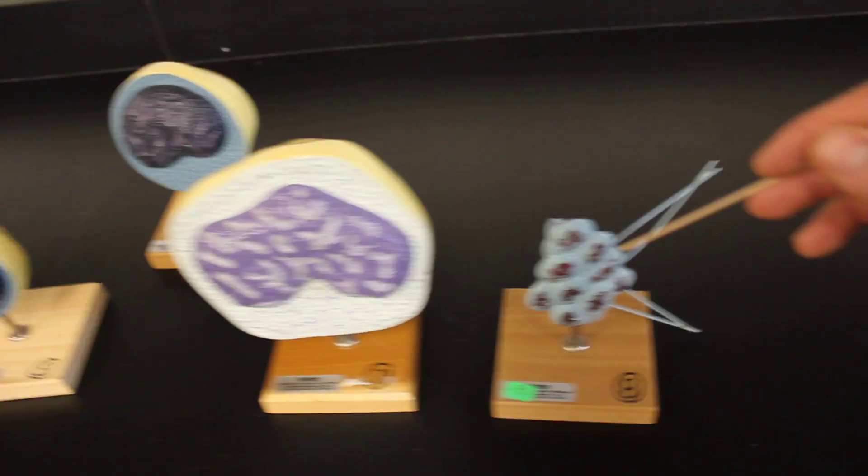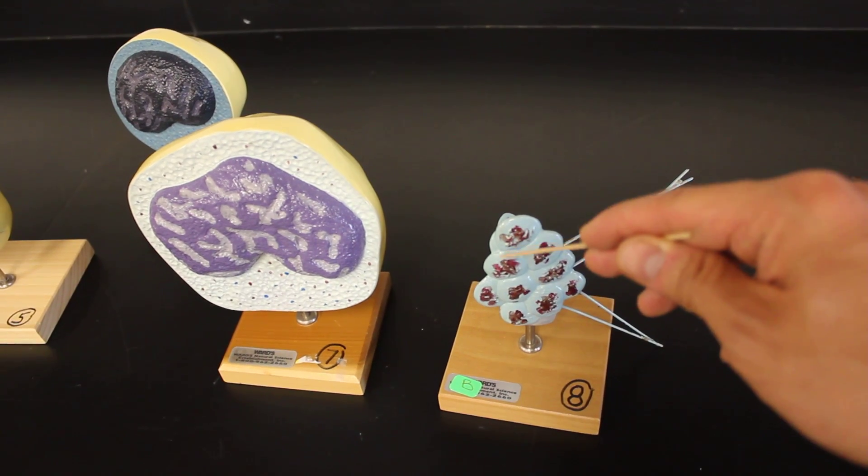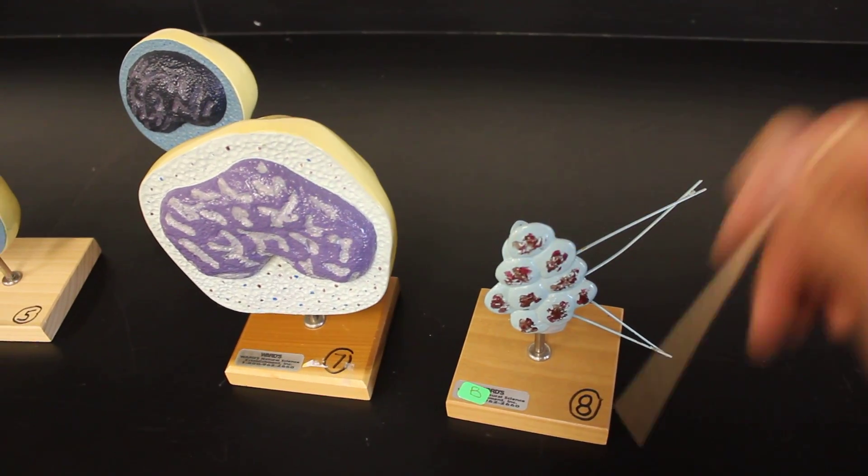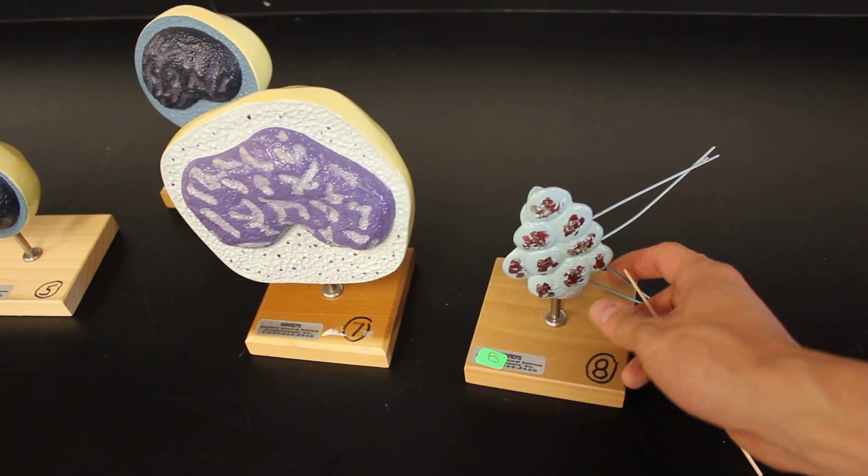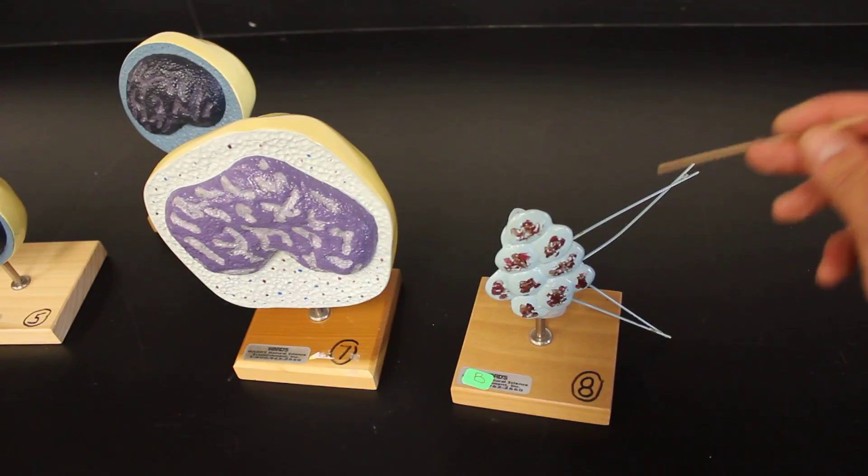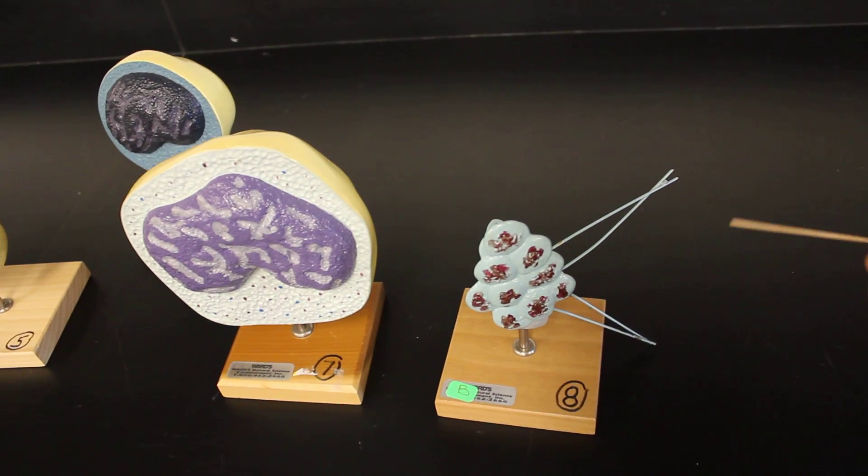And then lastly is our thrombocyte, which pinches off of a megakaryocyte, and we just use them for clotting. What these strands are, are just strands of fibrin, which are part of the plasma that become insoluble once fibrinogen changes to fibrin.